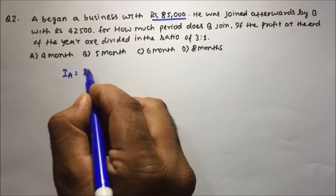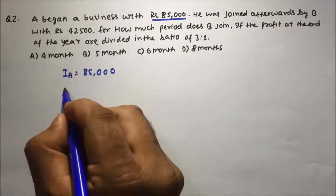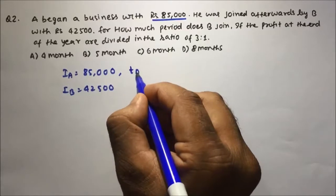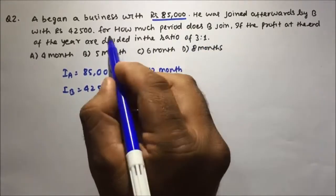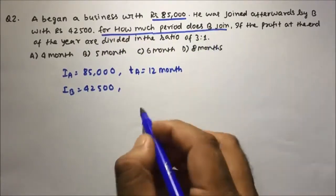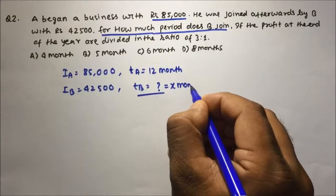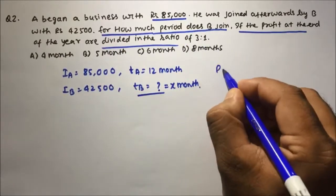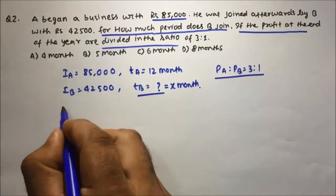The investment of A was 85,000 rupees. He was joined afterwards by B with 42,500 rupees. A invested from the beginning, so A will invest for 12 months. For how much period B joins, we do not know — that is what we have to calculate. Suppose B invested for x months. The profit at the end of the year was divided in the ratio 3 is to 1.